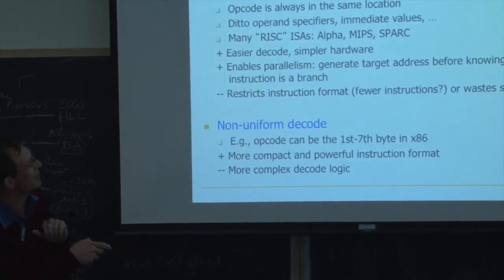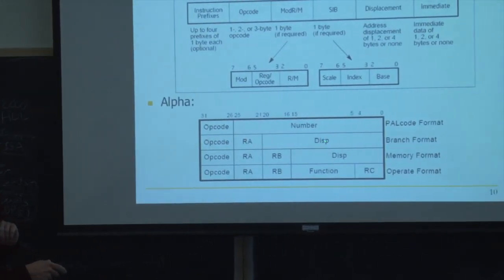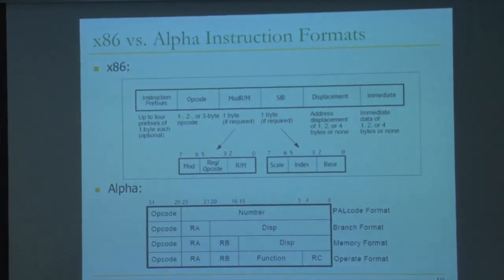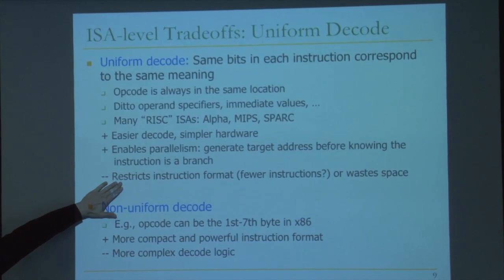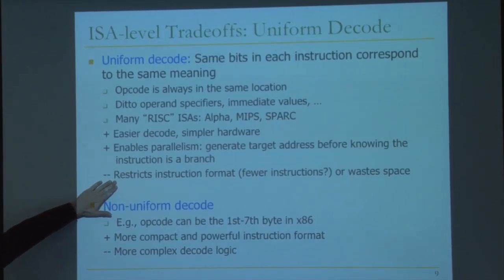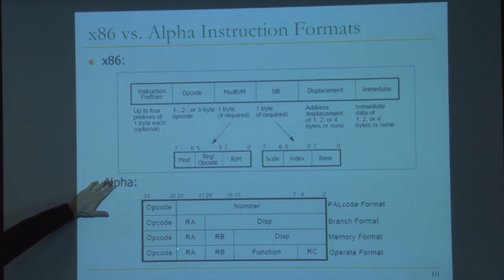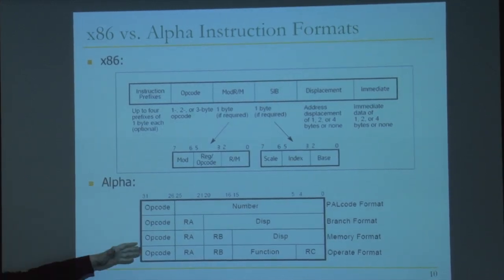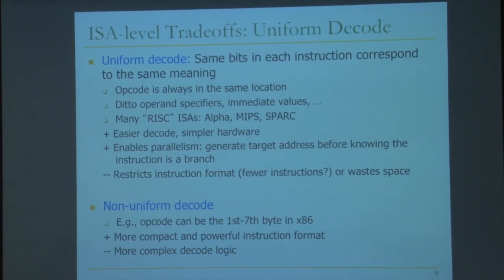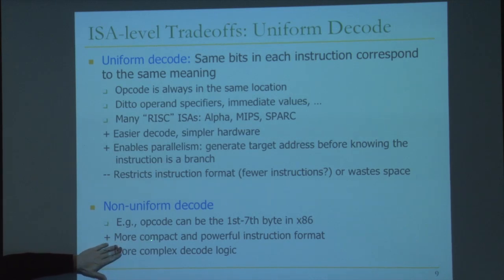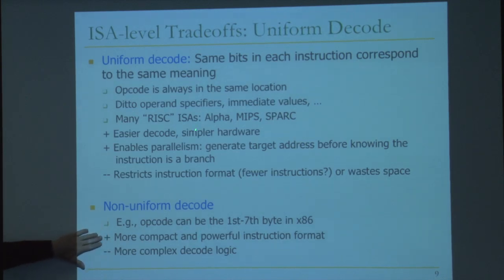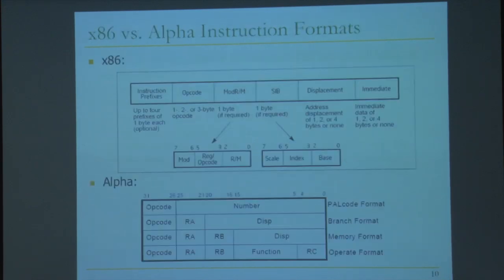The downside of uniform decode is it restricts instruction format — if the opcode always has to be here, your instruction format is restricted. Non-uniform decode, by contrast, has a more compact and powerful instruction format — you can have any field anywhere — but the downside is more complex decode logic. Non-uniform decode normally goes with variable length, but it doesn't have to. Usually, uniform decode goes with fixed length because it's more of a design philosophy.